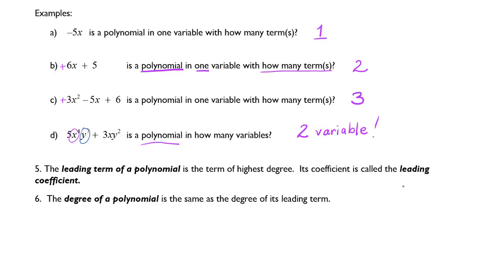There are 2 more things we need to talk about. The leading term of a polynomial, which I think I've already used today in this video, is the term of highest degree. Its coefficient is called the leading coefficient. If you had a monomial, then the leading coefficient is the only coefficient.